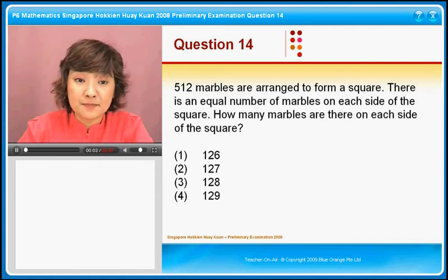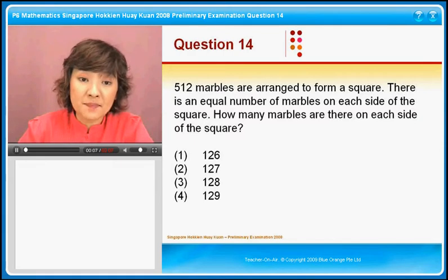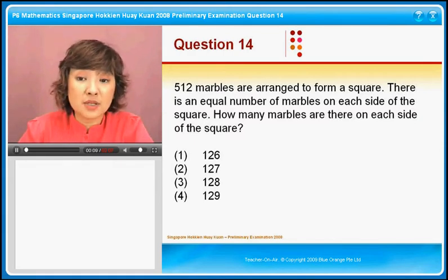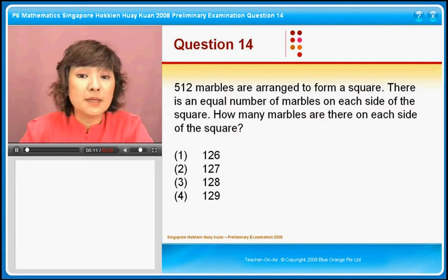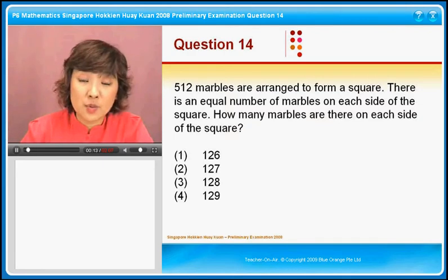Let's move on to question 14. 512 marbles are arranged to form a square. There is an equal number of marbles on each side of the square. How many marbles are there on each side of the square?